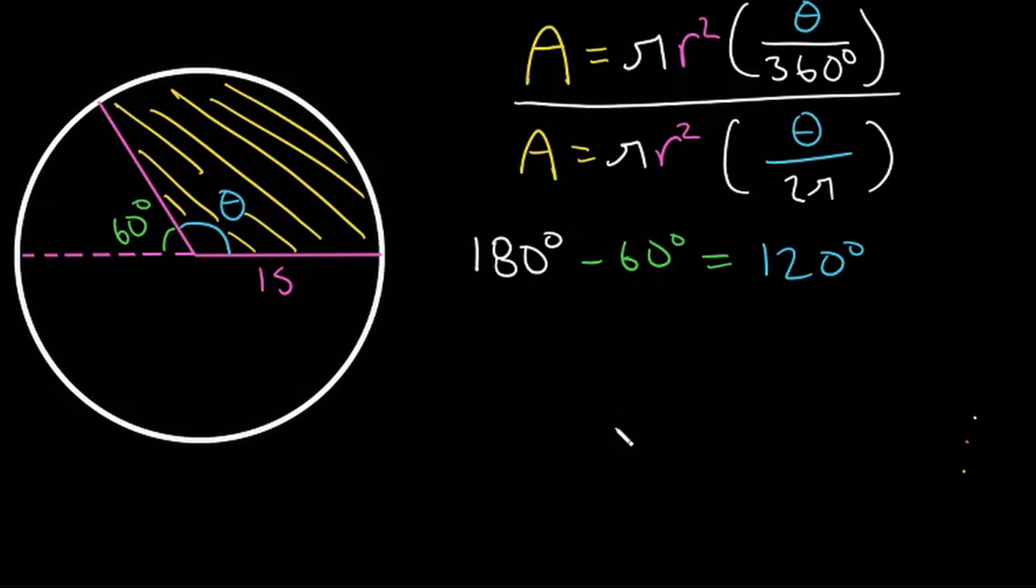So now that we have all of our information we can plug it into our formula. So area is going to be equal to pi times 15 squared multiplied by 120 divided by 360. So let's continue to simplify this.